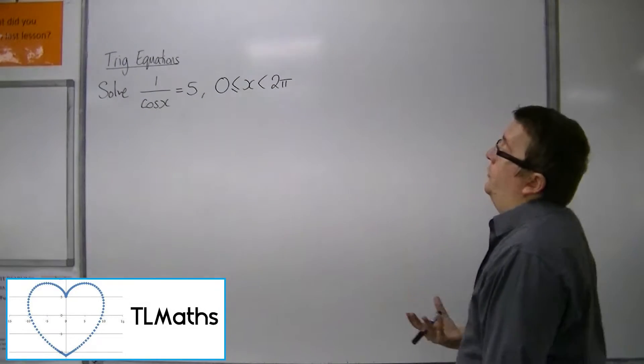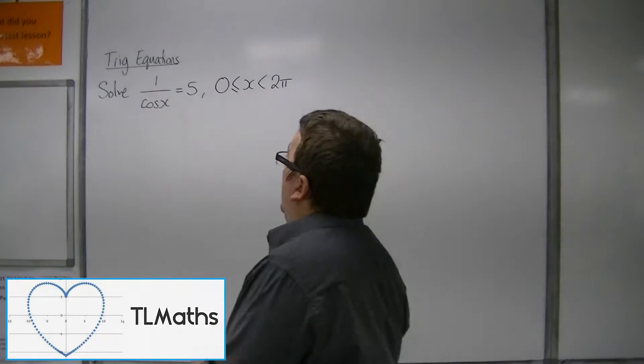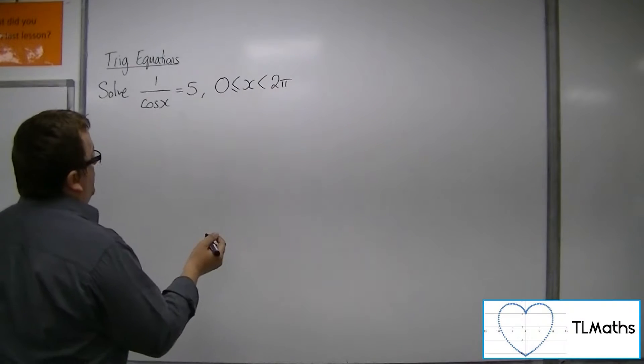Let's say I want to solve 1 over cos x equals 5, in radians between 0 and 2 pi.